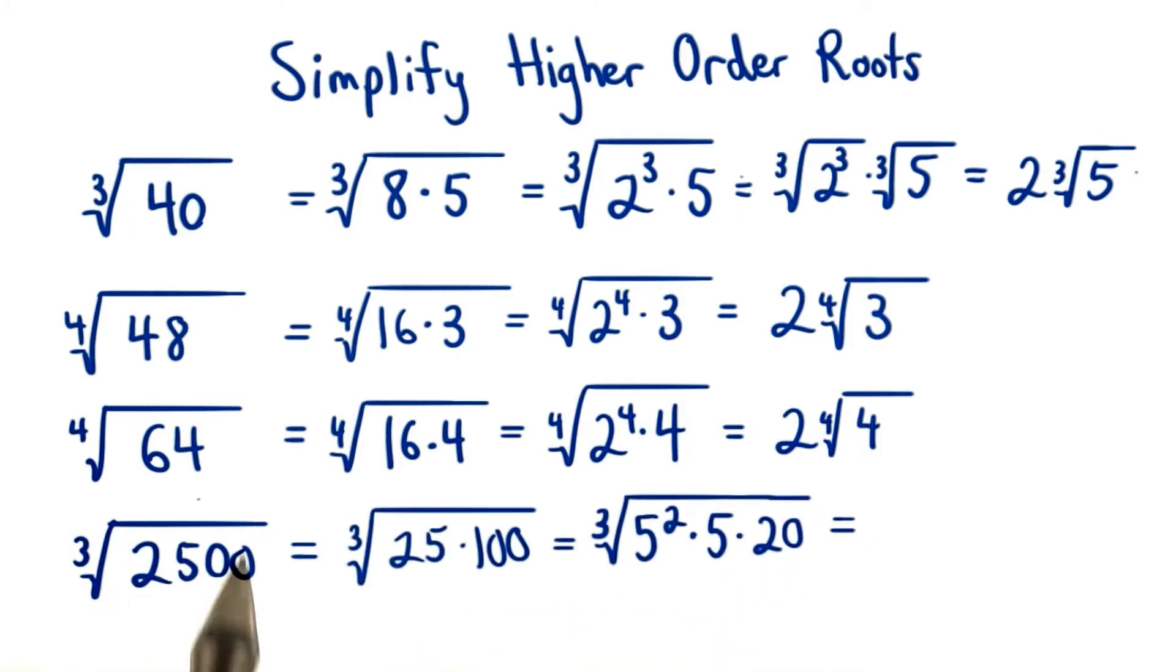For our last one, we split up 2500 into 25 times 100. 25 equals 5 squared, and 100 equals 5 times 20. We do this step so we can get three factors of 5 together. We know that the cube root of 5 cubed is just 5.